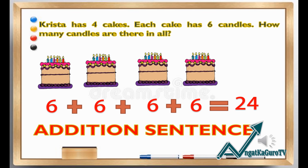I have a problem here. The problem is: Krista has 4 cakes. Each cake has 6 candles. How many candles are there in all?